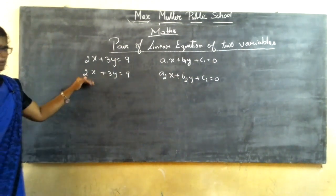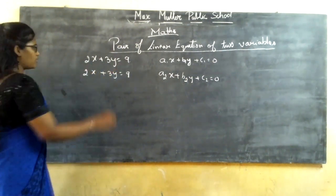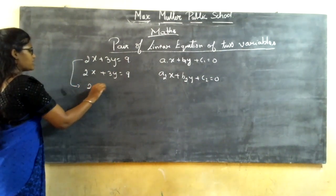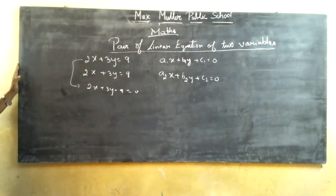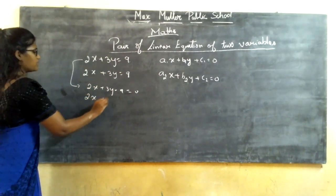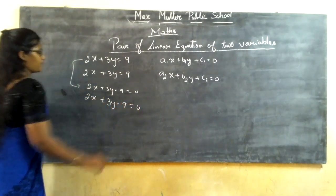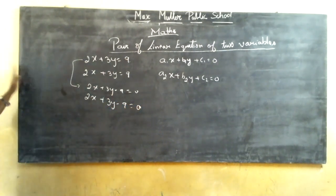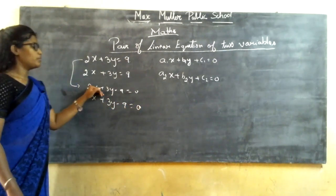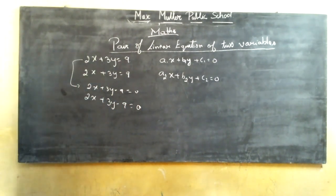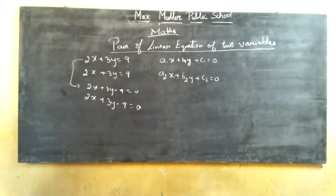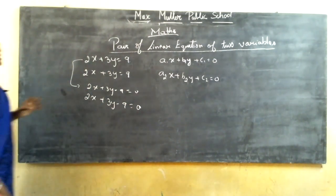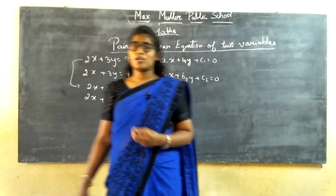If you are given an equation like 2x + 3y - 9 = 0, this is an algebraic expression with numbers and alphabets. Using the graphical representation, they will ask you to express the algebraic expression and justify whether it is an intersecting line, parallel line, or coincident line. There are three conditions for this.